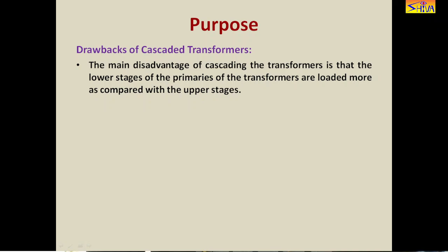The first drawback was that the lower stages of the primaries of the transformers are loaded more as compared with the upper stages. The reason is the first stage is supplying the excitation for the second stage as well as the third stage. The second drawback is that large excitation current is required because all the excitation current is supplied by the first stage — the second and third stages' excitation current requirements are all fed through the first stage.